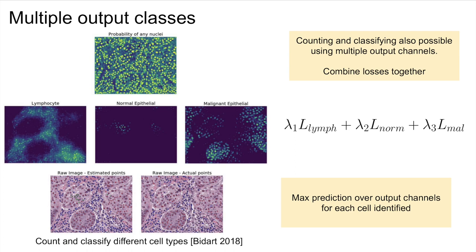This approach can be extended to multi-class cell counting as well. Simply use a multi-class segmentation network and sum the counting losses together. This example shows counting lymphocytes, normal epithelial cells, and malignant cells all at once.